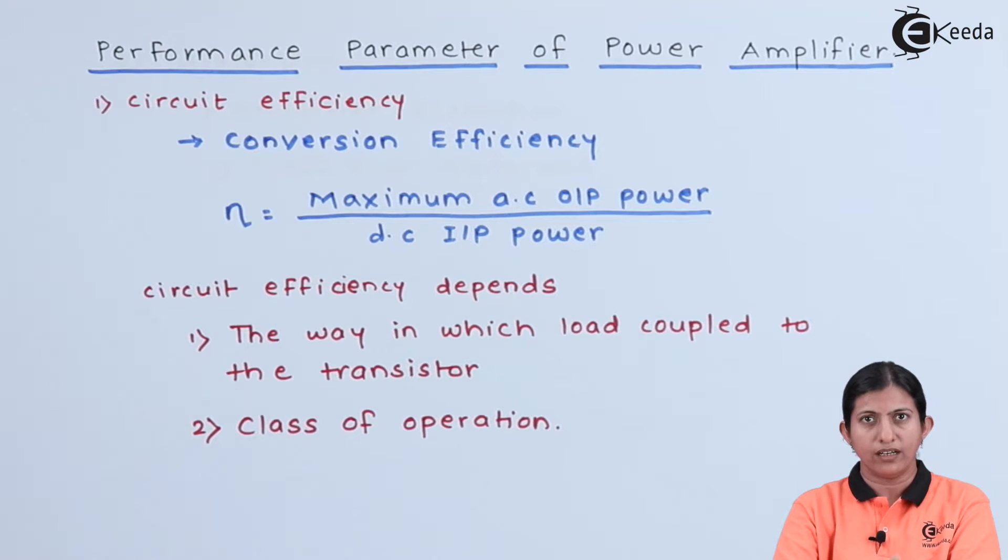In voltage amplifier, voltage gain is the main criteria. But in case of power amplifier, power gain is not the main criteria.